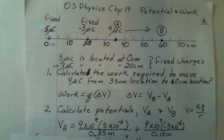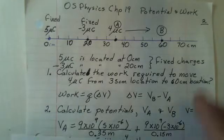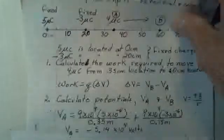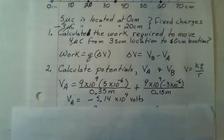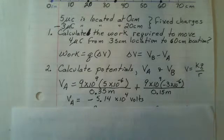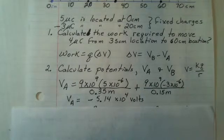So potential for the five microcoulomb charge, nine times ten to the ninth and five times ten to the minus six, and our distance is 35 centimeters. From zero out to 35 centimeters, that becomes 0.35 meters.